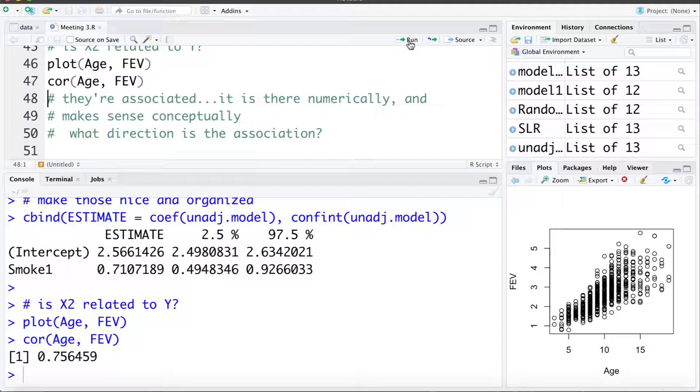We can see the correlation is 0.756. So they are associated numerically, it makes sense conceptually that they'd be associated, and if we think of the direction of the association it would be age having an impact on lung capacity and not the other way. Your lung capacity can't have a direct effect on your age.